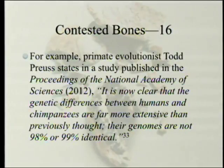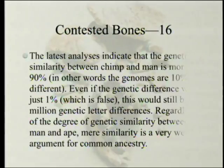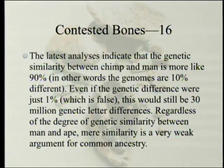Sometimes even 99% is cited. Primate evolutionist Todd Proust states in a study published in the Proceedings of the National Academy of Sciences: 'It is now clear that the genetic differences between humans and chimpanzees are far more extensive than previously thought. Their genomes are not 98% or 99% identical.' The latest analyses indicate the genetic similarity is more like 90%—the genomes are 10% different. Even if the differences were just 1%, which is false, this would still be 30 million genetic letter differences. Mere similarity is a very weak argument for common ancestry.